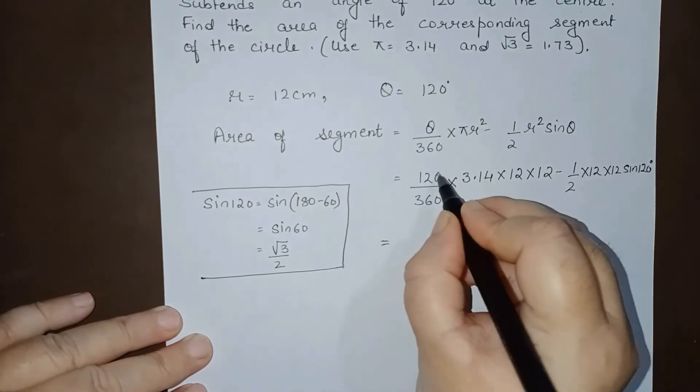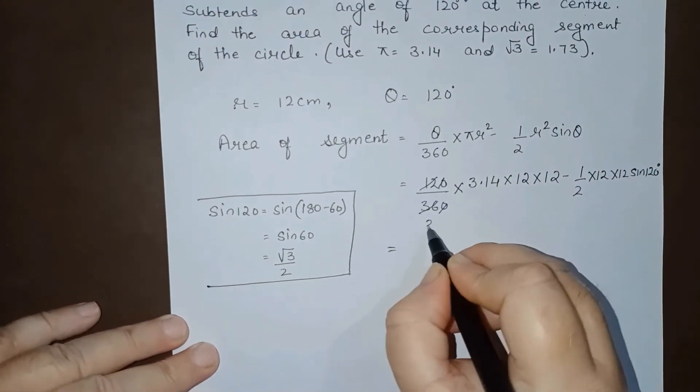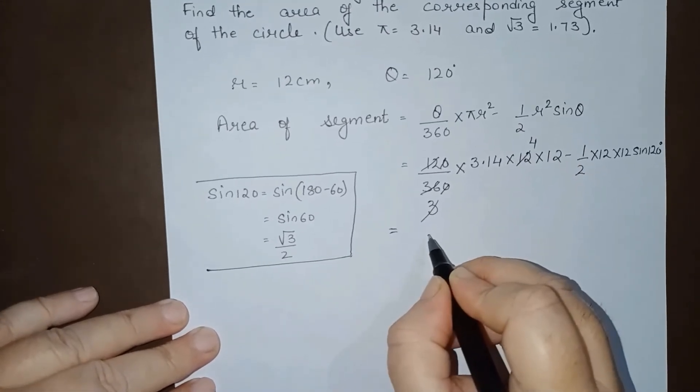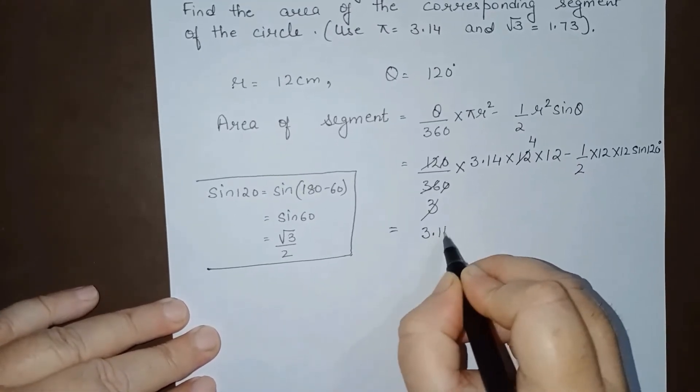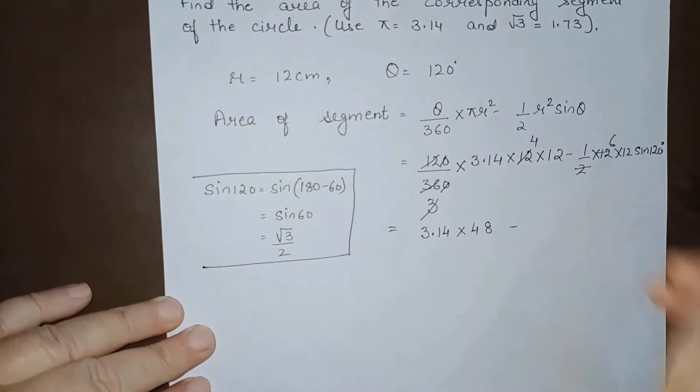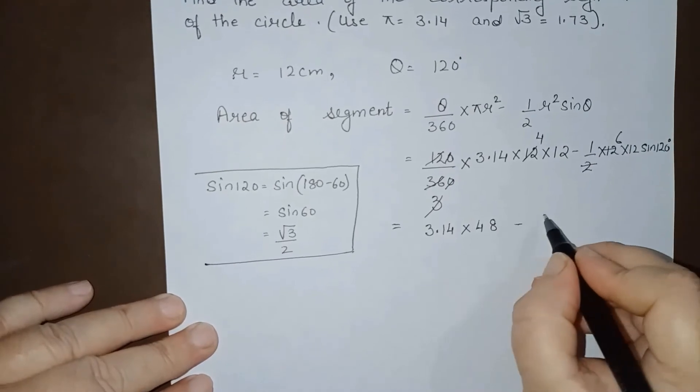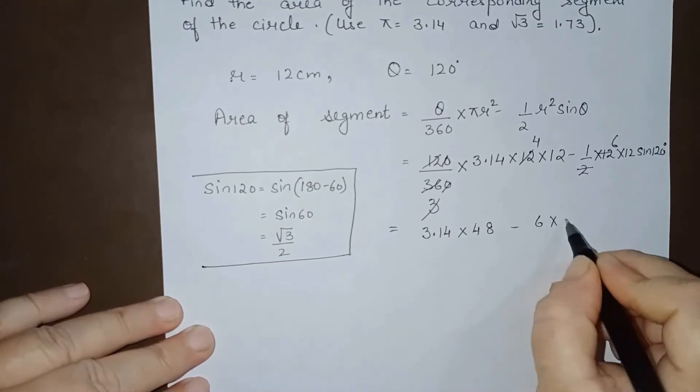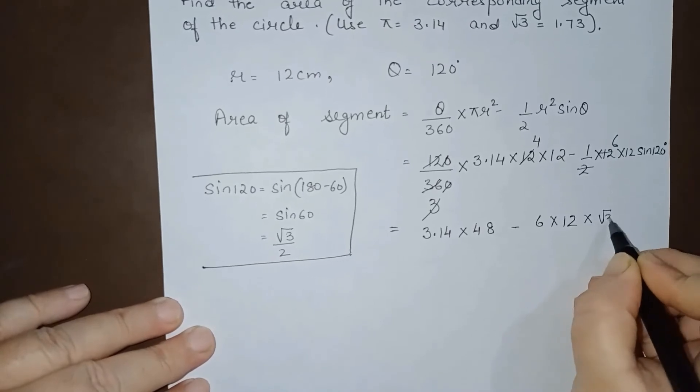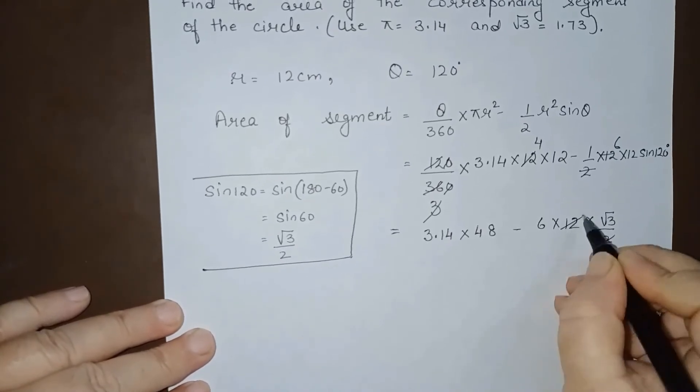Now 120/360 simplifies to 1/3. So we get (1/3) × 3.14 × 144 - ½ × 144 × (√3/2). This becomes 3.14 × 48 - 6 × 12 × (√3/2), which simplifies to 3.14 × 48 - 36√3.